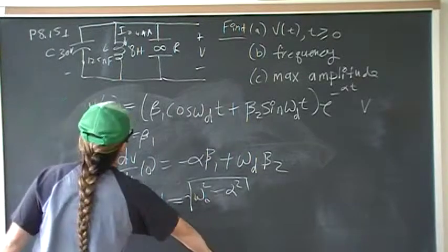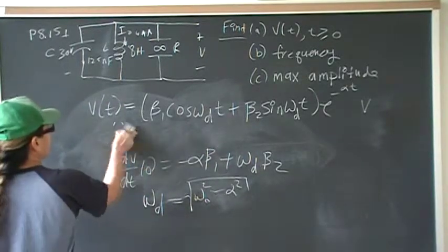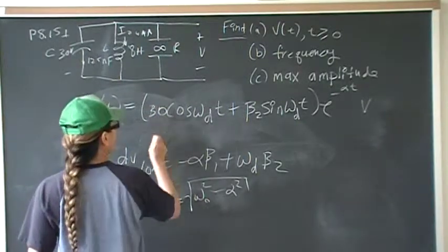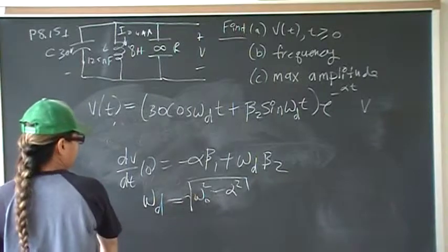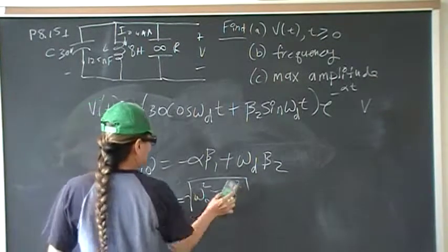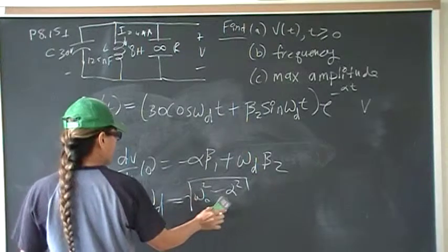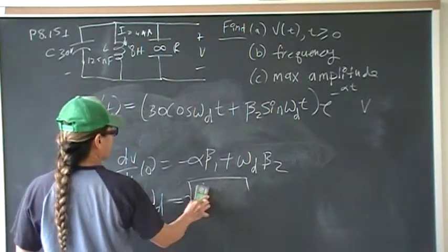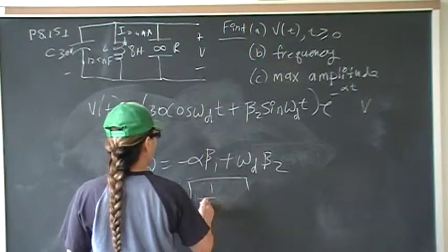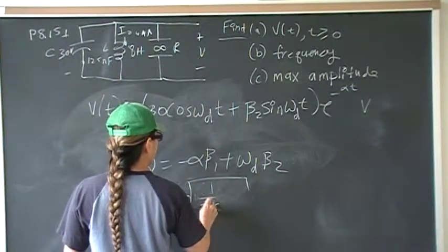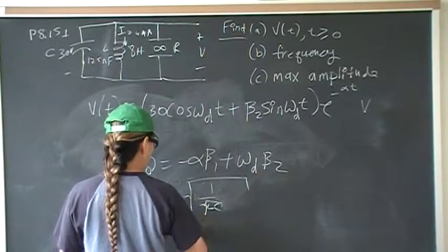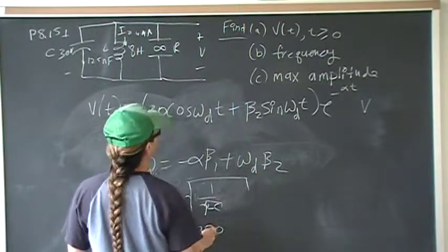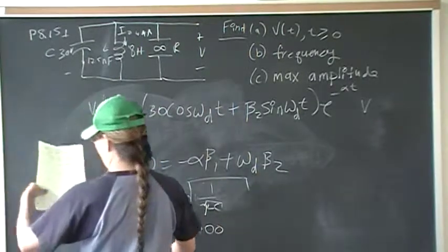So this tells me that beta 1 is 30, so already I have that information up here. And the other easy piece is the omega d. This is just going to be omega naught squared because alpha is 0. So omega naught squared is 1 over root LC, and that would actually be, if you put that into your calculator, the value of L and the value of C, you should get 1,000 radians per second.